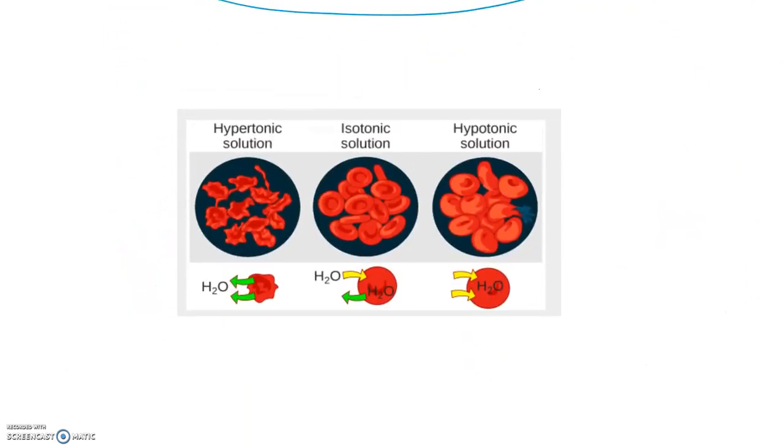Now we're going to talk about another process called osmosis, which specifically deals with the diffusion of water. Let's talk about why we would need to have the diffusion of water. Well, we said that some solute molecules are too large or too charged to cross the plasma membrane. So when that's the case, water actually will move to try to make up for the difference in the solute concentration outside the cell versus inside the cell.